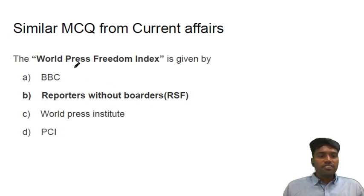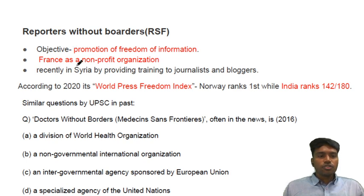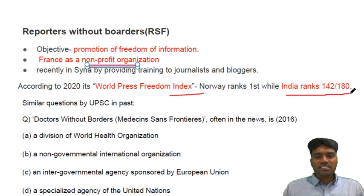There is one index that has come in the news: the World Press Freedom Index. It is given by Reporters Without Borders. They are an NGO — focus on this — whose objective is the promotion of freedom of information. Presently they are operating in Syria, training journalists and bloggers and reporting about war crimes. An important tip for any index: always remember India's rank and who is leading in that index. This is very much important.